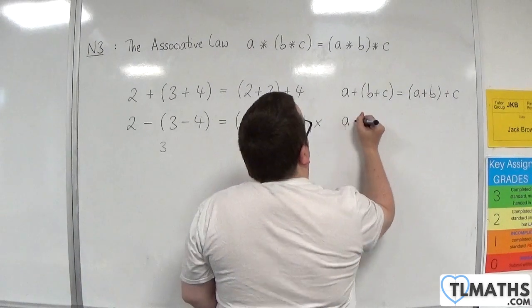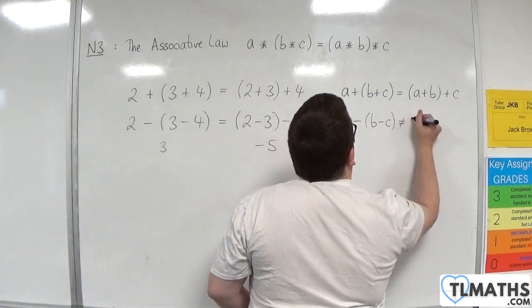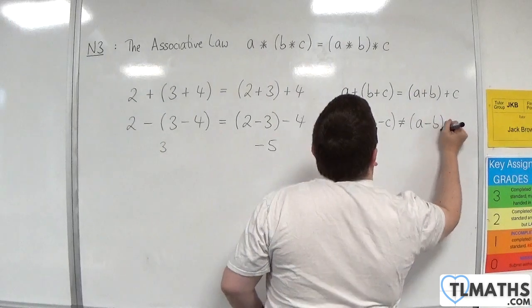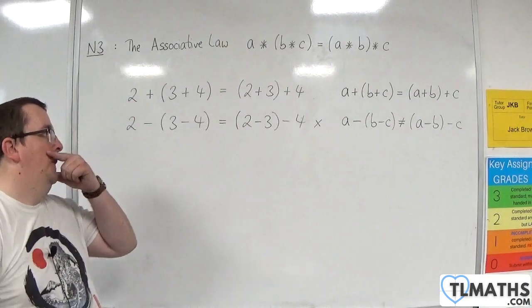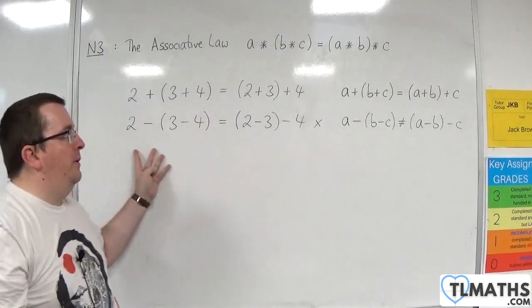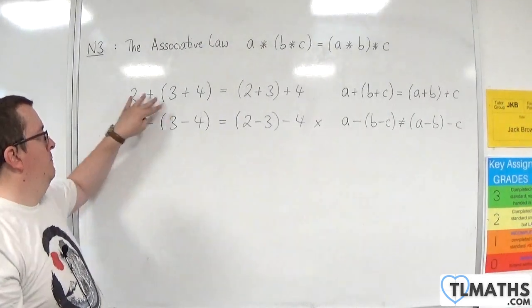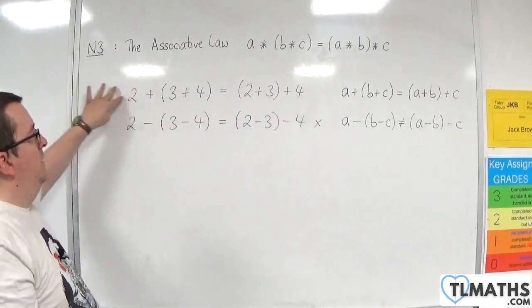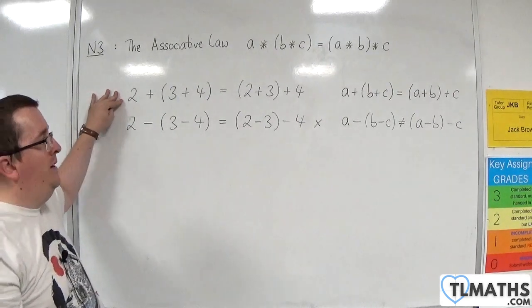So we cannot say that A take away B take away C is the same as A take away B take away C. And we can come to that conclusion because we can find one example where it fails. But I'm perfectly saying that that is not a proof, just finding one example where it works. But we know that to be true.